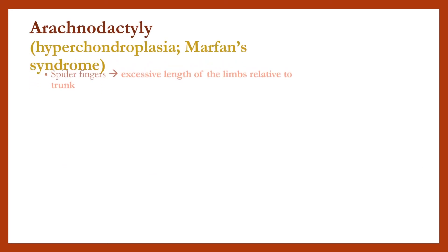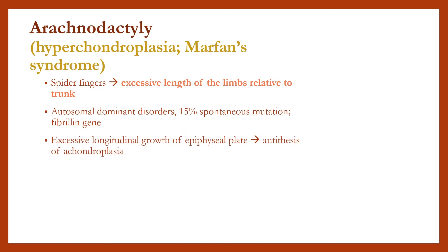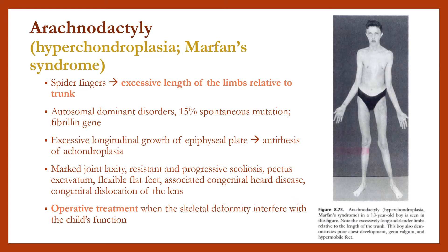Arachnodactyly, or spider fingers, involves excessive length of limbs relative to the trunk. It is a huge autosomal dominant disorder with 15% spontaneous mutation, involving the fibrillin gene. There is excessive longitudinal growth of the epiphyseal plate. It is the antithesis of achondroplasia. Features include marked joint laxity, resistant and progressive scoliosis, pectus excavatum, flexible flat feet, associated congenital heart disease, and congenital dislocation of the lens. Operative treatment is indicated when skeletal deformity interferes with the child's function.